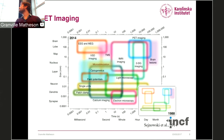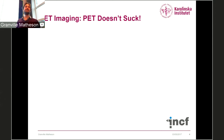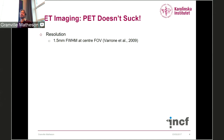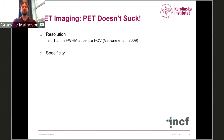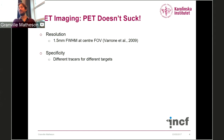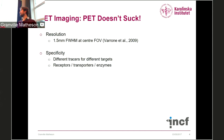So basically, the question is: does PET suck? And my answer is no, PET does in fact not suck. First, just to settle a score, resolution-wise PET doesn't actually have such bad resolution. Our HRT camera at the PET center has a 1.5 millimeter full width half maximum at the center of the field of view. But basically, this all misses the point about what PET does. PET has specificity — we can make different tracers for different targets and specifically look at receptors, transporters, and enzymes in the brain.